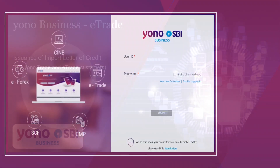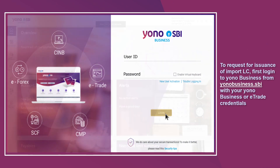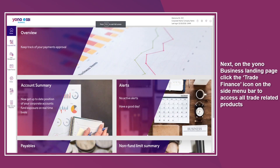To request for issuance of Import LC, first log into Yonobusiness from Yonobusiness.SBI with your Yonobusiness or E-Trade credentials. Next, on the Yonobusiness landing page, click the Trade Finance icon on the side menu bar to access all trade-related products.